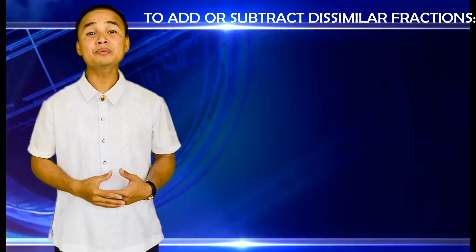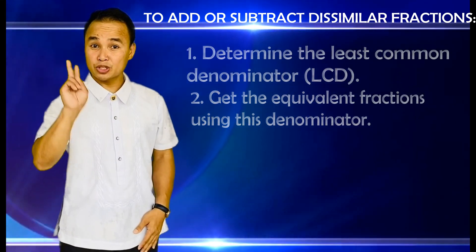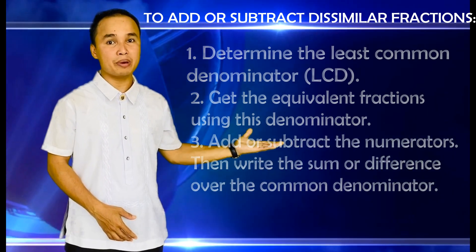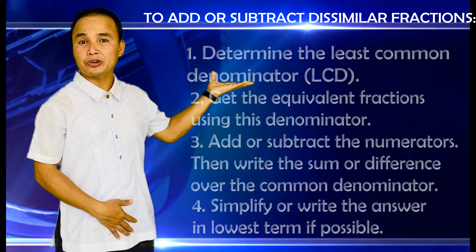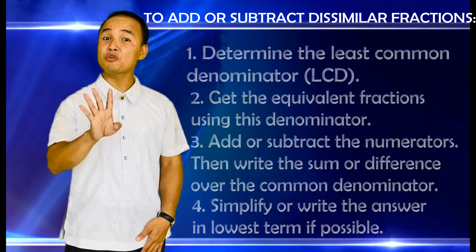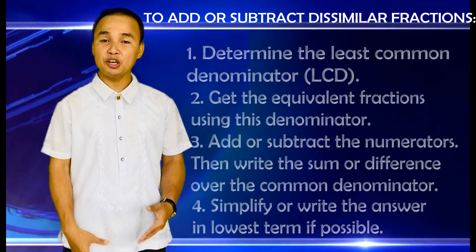To add or subtract dissimilar fractions, do the following steps. Number 1. Determine the least common denominator or LCD. Number 2. Get the equivalent fractions using this denominator. Number 3. Add or subtract the numerators. Then write the sum or difference over the common denominator. And number 4. Simplify or write the answers in lowest terms if possible.